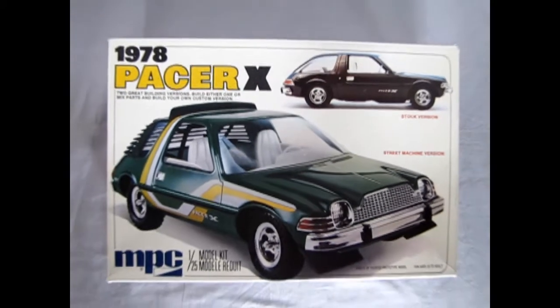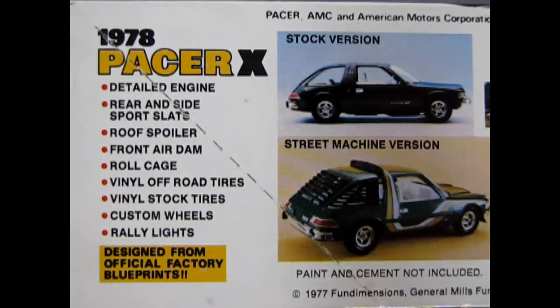So now let's jump back to 1978 where we get to check out the amazing Pacer X by MPC. The 1978 Pacer X comes with a detailed engine, rear side spoiler slats, roof spoiler, front air dam, roll cage, vinyl off-road tires, vinyl stock tires, custom wheels, rally lights, and it is designed from official factory blueprints.